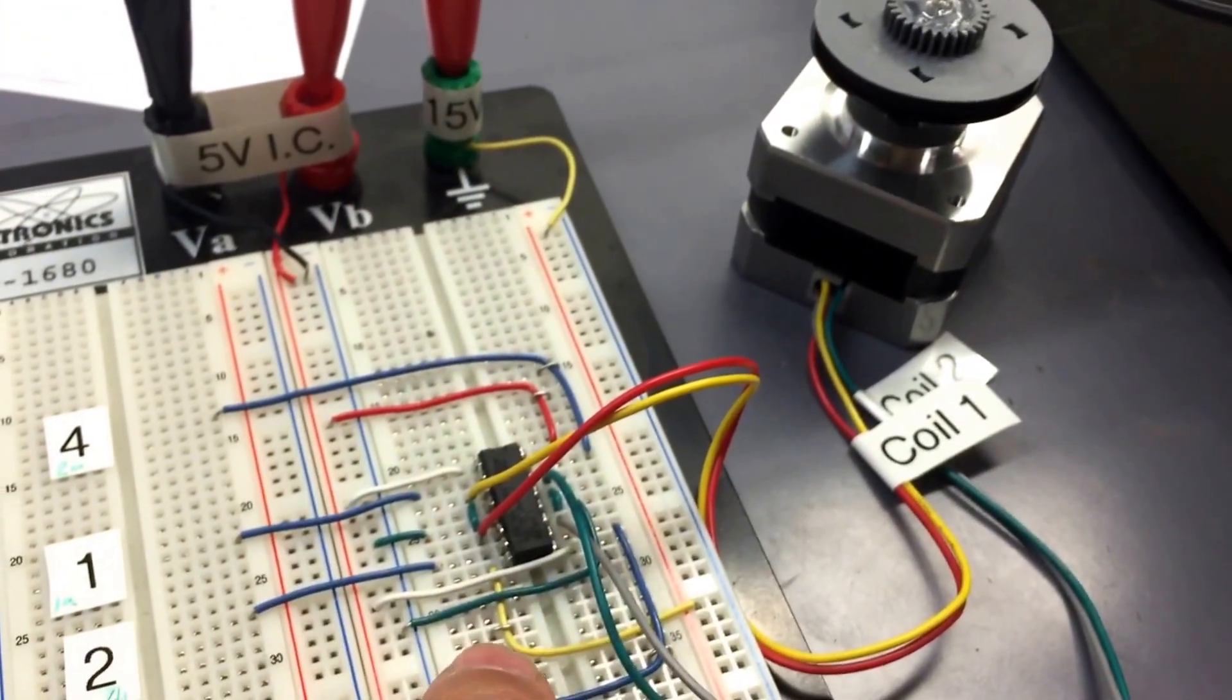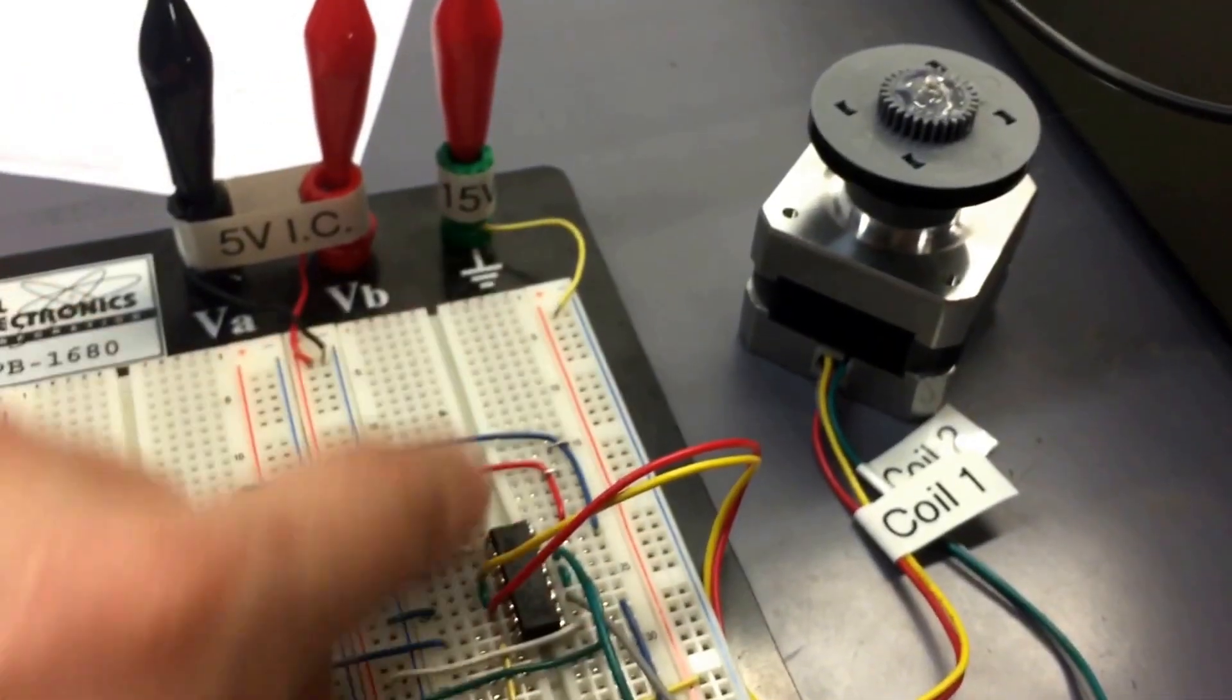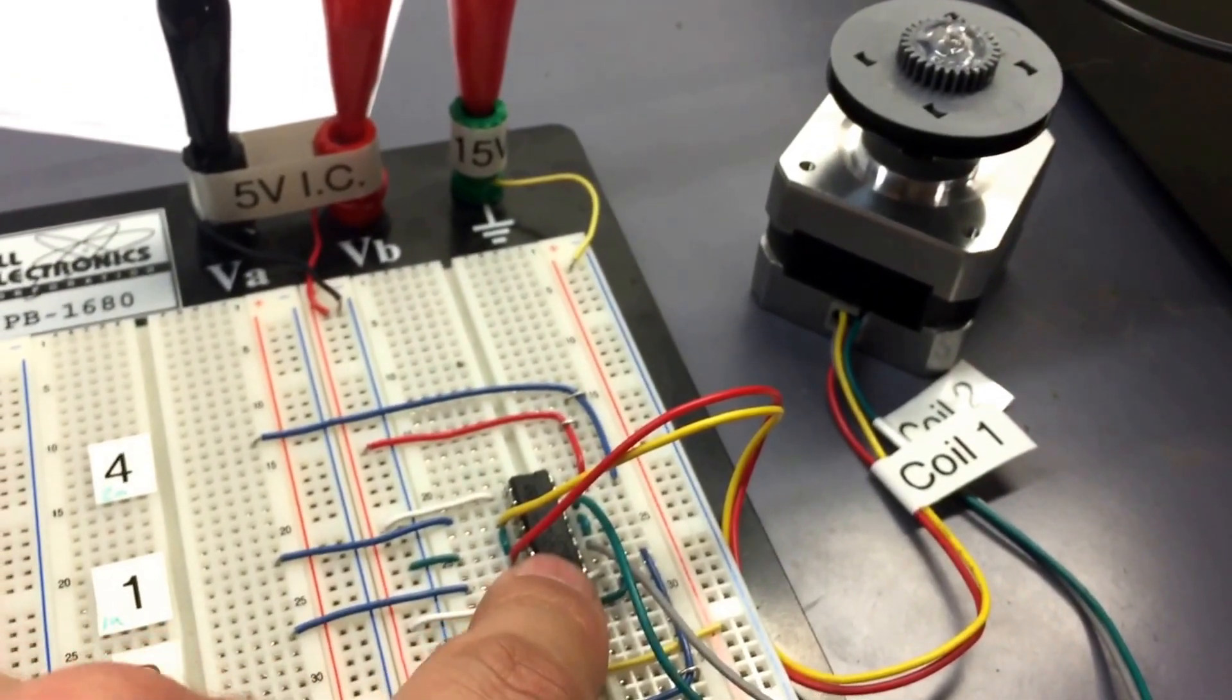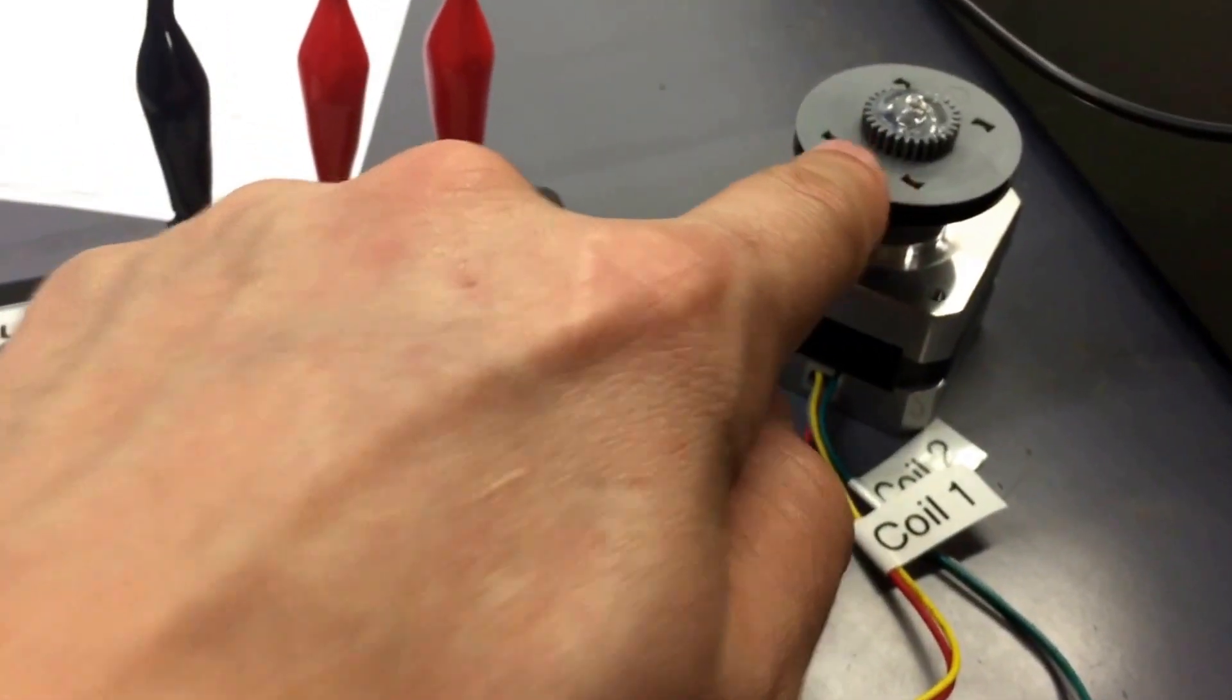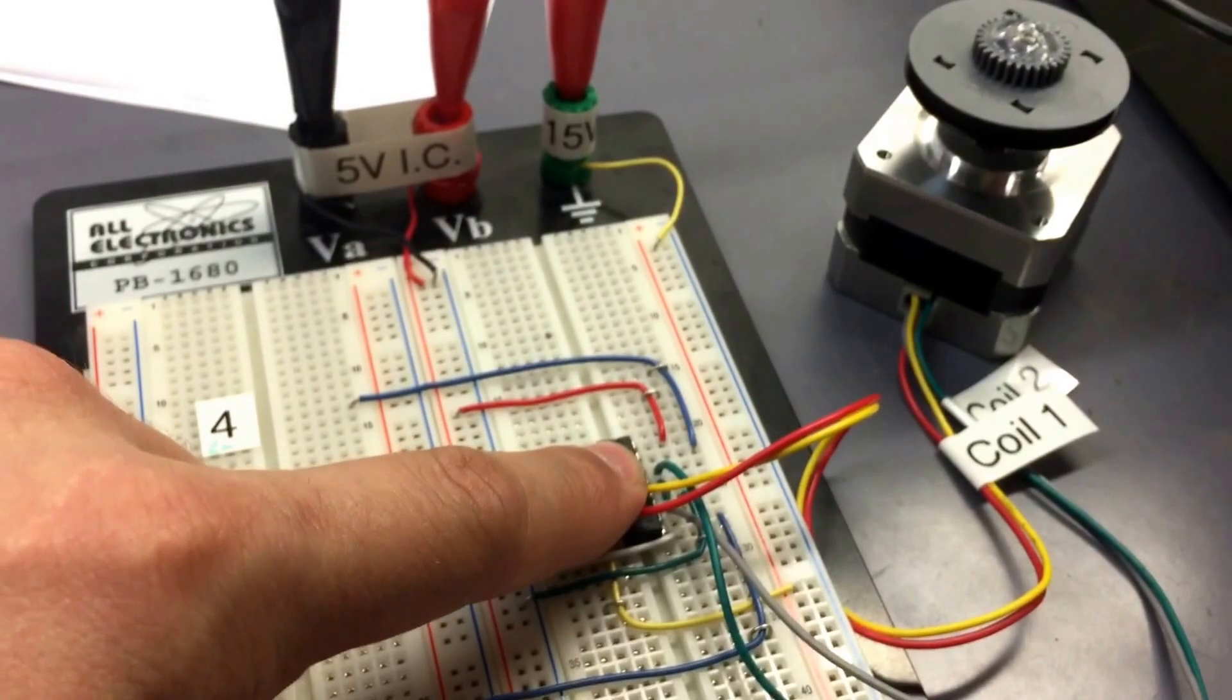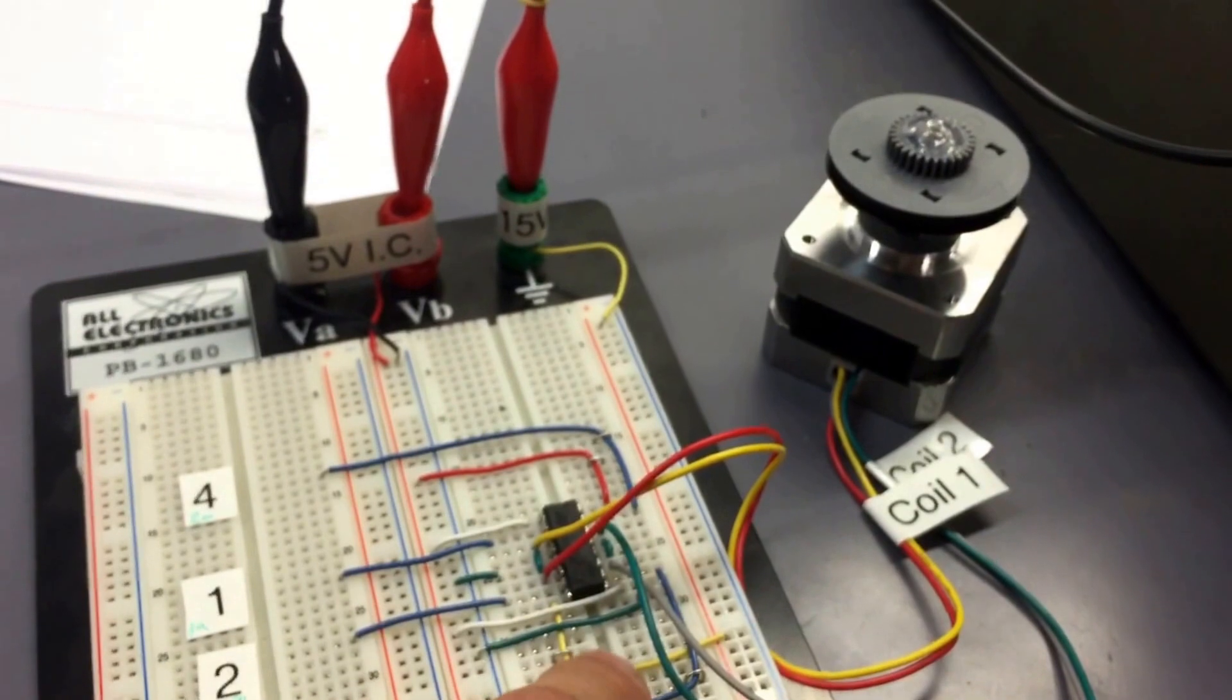What that means is it is an external power supply that's going to be connected to this chip, and it will in turn decide which coils are powered up for this particular motor. Because clearly the 5 volt that powers this chip isn't sufficient enough to additionally power up the motor. So this is an additional power supply.